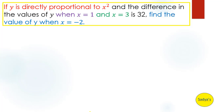The second information is: the difference in the values of y is 32. Third, when do we take the difference? When x is equal to 1. Fourth, x is equal to 3. And finally, we have to find the value of y when x is equal to minus 2.